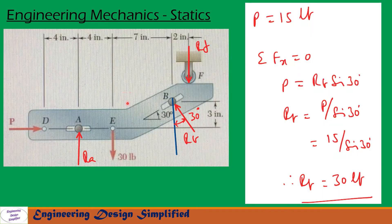First, let us look at the forces and reactions. Force P acts at point D and a force of 30 LB acts at point E downwards, with P acting towards the right. Due to these forces, the reaction at A will be perpendicular to its slot, and the reaction at B will be perpendicular to its slot. Since the angle at B is 30 degrees, that reaction makes a 30-degree angle with the vertical. There is also a reaction at F acting vertically downwards. Since the pins are frictionless, there are no forces along the slots.